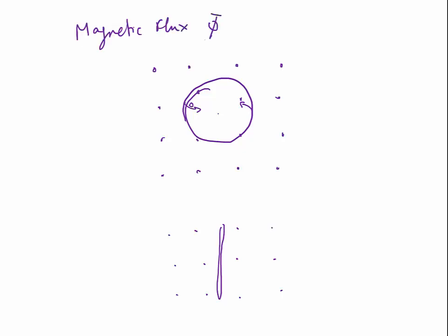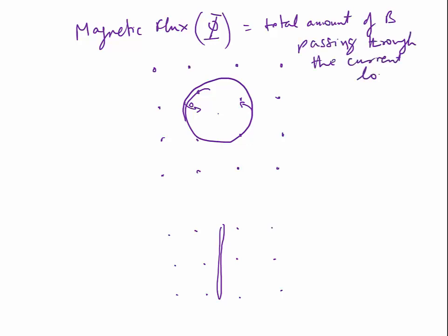Magnetic flux is denoted by the Greek letter phi (capital Φ), and it's the total amount of magnetic field passing through a loop — really a loop in which current will be induced. We're not passing current through this loop by connecting it to a battery; it's just a loop of wire in which current will be generated. Calling it a current loop is an anticipation of the fact that there's going to be some current induced.